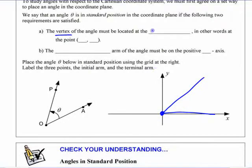Placing it on a coordinate axis so that the vertex is here. The vertex of the angle has to be at the origin. The origin is the point zero, zero. And the initial arm is on the positive x-axis.